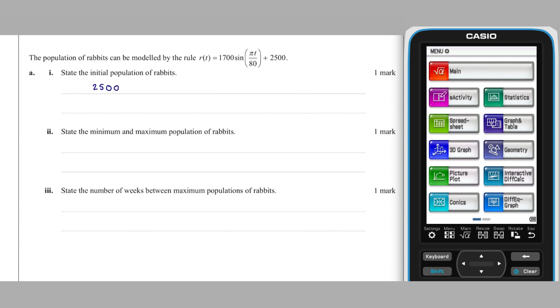its maximum and minimum values can be found by adding and subtracting the function's amplitude from its principal axis. This information could also have been found using a CAS or graphing tools if necessary.